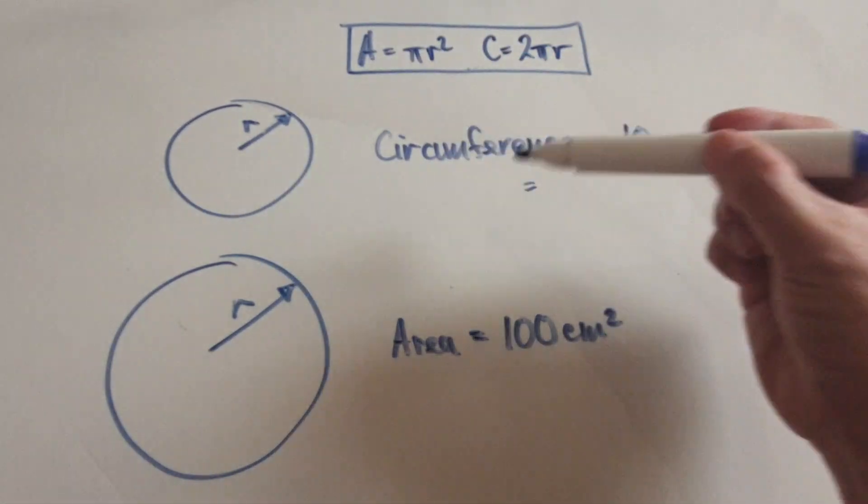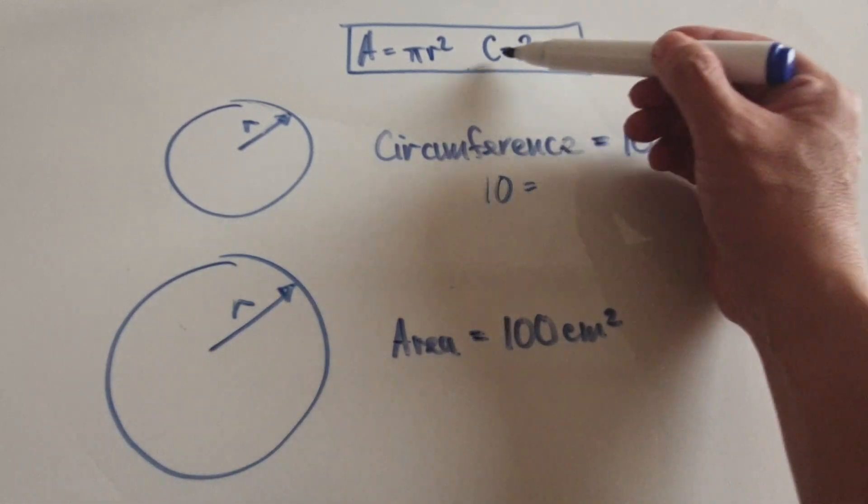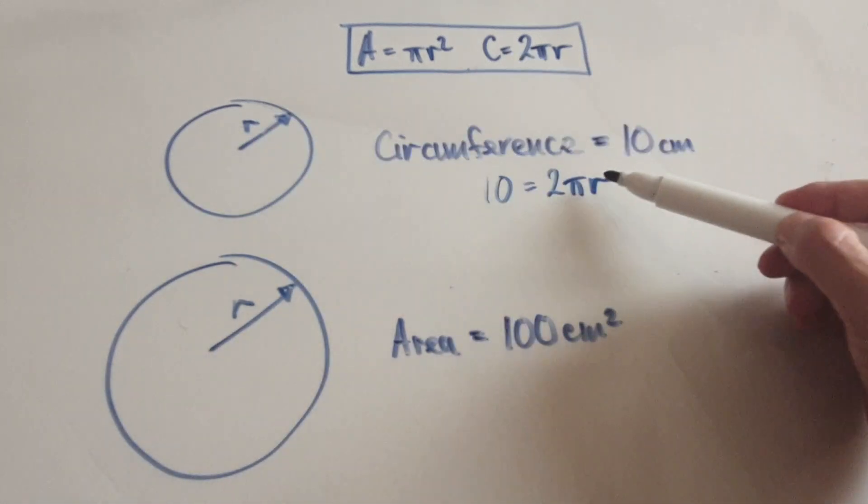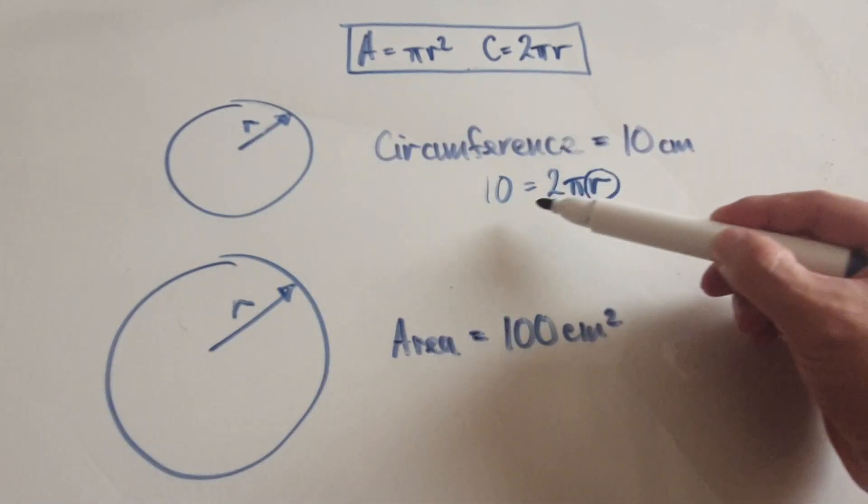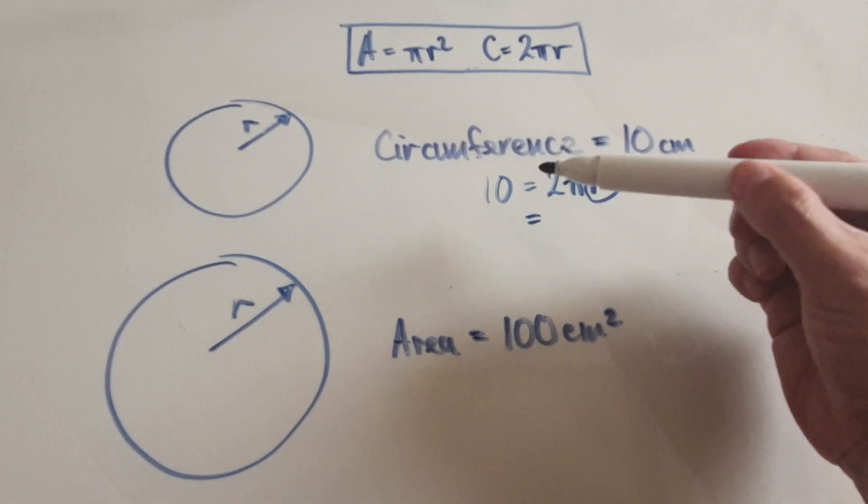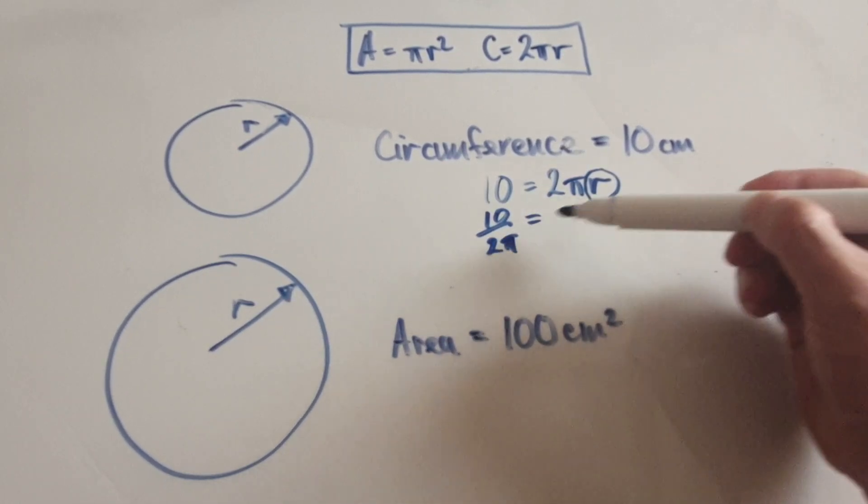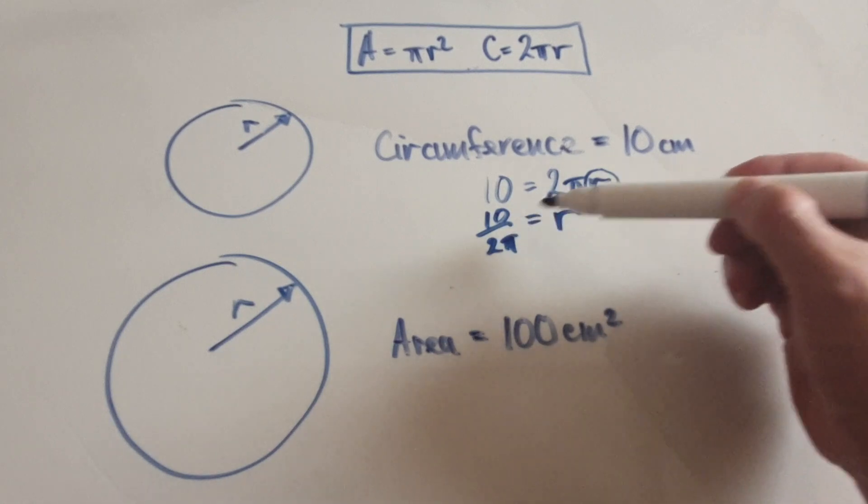Your job is to work out the radius, to get r on its own. Divide both sides by 2π, so that would be 10 over 2π. That would be your radius.